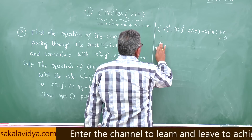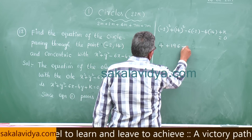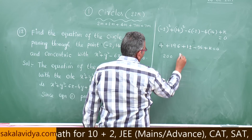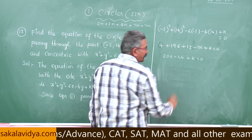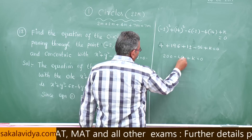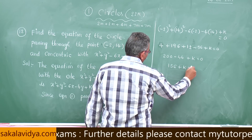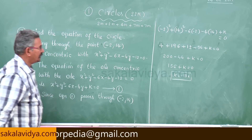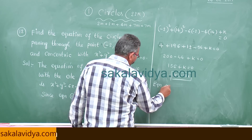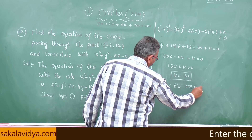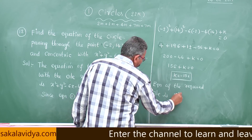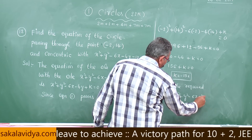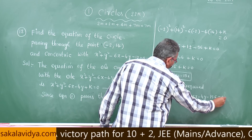Evaluating: 4 + 196 + 12 - 56 + k = 0, which gives 156 + k = 0, so k = -156. Now that we know k, the equation of the required circle is x² + y² - 6x - 4y - 156 = 0. This is the answer.